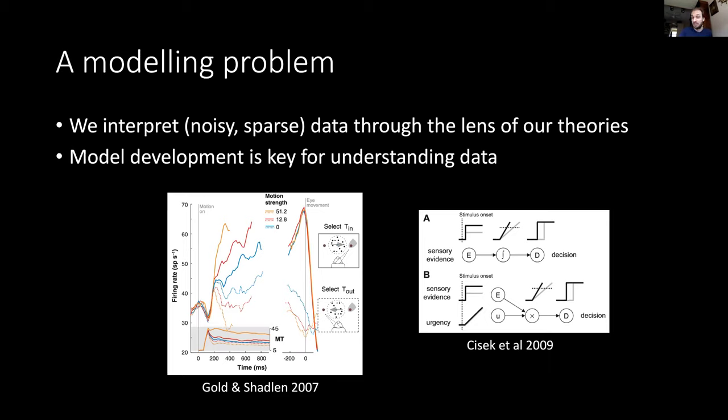One is the proposal in terms of the urgency gating model, which was developed by Paul Cisek and colleagues in 2009. Their core proposal was that these firing rates are not just a signature of pure evidence integration but reflect a combination of the momentary sensory evidence plus a rapidly growing urgency signal.